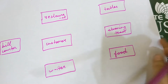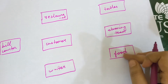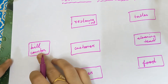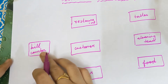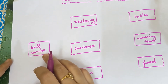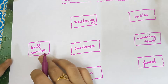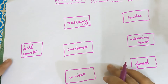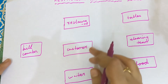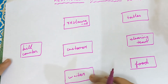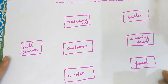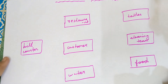Food — you are able to touch it, therefore it is an entity. Bill counter is an entity because it is a building where a person will be taking care of the payment. So the entities are restaurant, customer, waiter, tables, cleaning team, food, and bill counter. This is the first step.